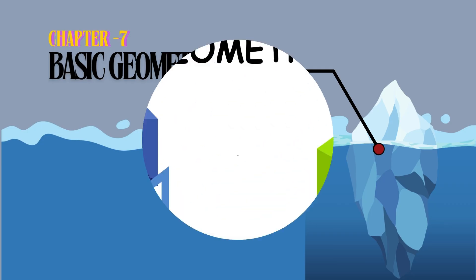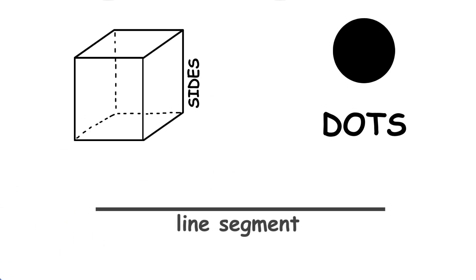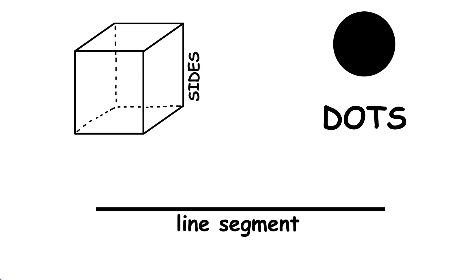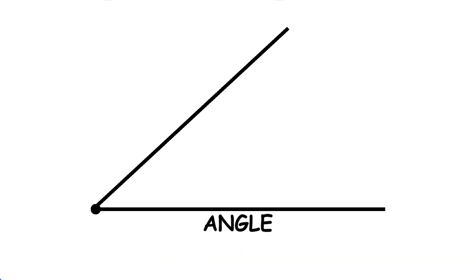Basic geometry. Geometry is all about shapes. Shapes are made out of points, which can be seen as dots. Shapes can have sides, each side being a line segment, a segment of an infinitely stretching line. When two lines come together at a point, they form an angle.